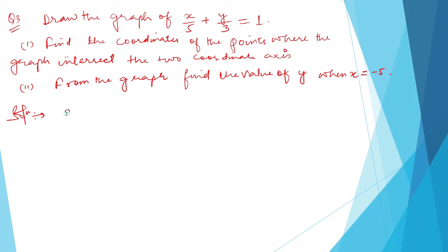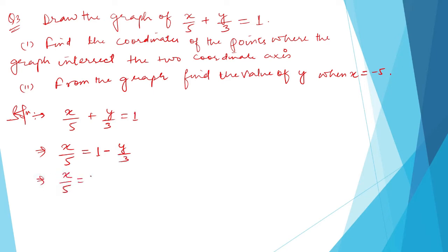First, we need to draw the graph of this equation. Rearranging: x divided by 5 equals 1 minus y divided by 3, which gives x divided by 5 equals 3 minus y, all divided by 3. Transferring, x is equal to 5 times (3 minus y) divided by 3, which is 15 minus 5y, divided by 3.